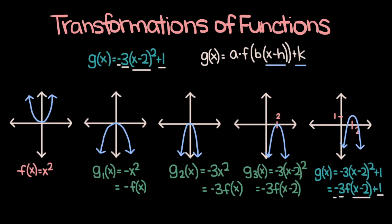Just to review each of these steps: we have f of x is equal to x squared, then we reflected that function over the x-axis, then we stretched it vertically by a factor of 3, shifted it to the right by 2 units, and then shifted it up 1 unit, and we ended up with g of x. You can break down the graphing of these functions into their individual transformations and make it a step-by-step process. Now let's move on to the second example.